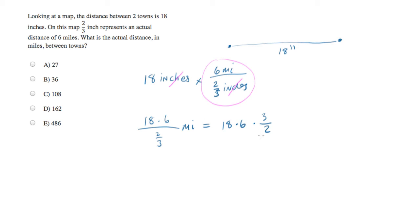Now, we can do some simplification. Let's cancel out the 2 and the 6 for a 3. And what we're left with is 18 times 9, which has a value of 162. And that is your answer, D.